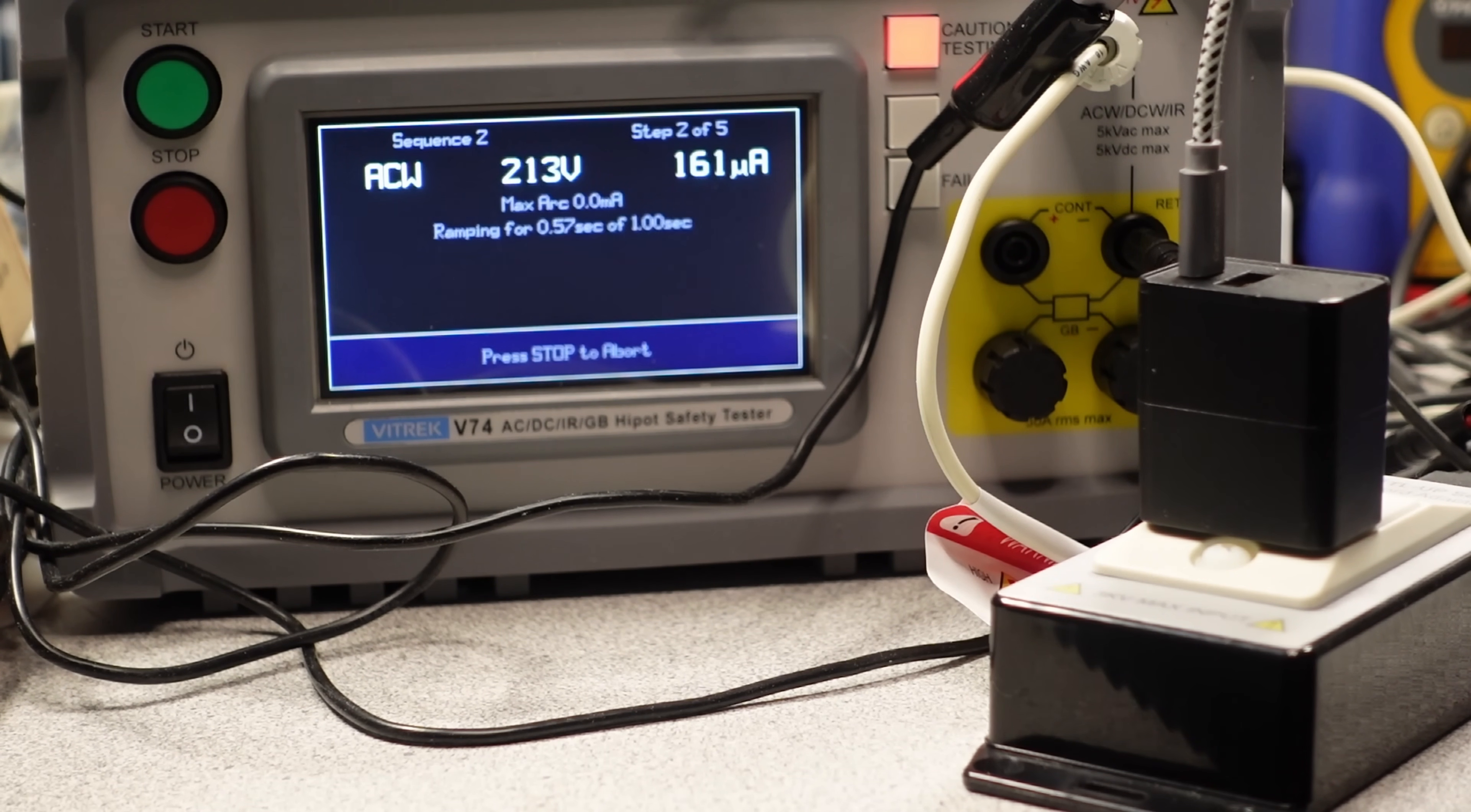I attached this adapter to the hipot tester to see if there's any oddities with components across the adapter, and everything looks good here. Fairly low leakage at all of the voltage modes. No DC leakage either, so this is a good thing. It means the transformer is likely not blown up. Something else has gone wrong, and I think there's only one way to find out.